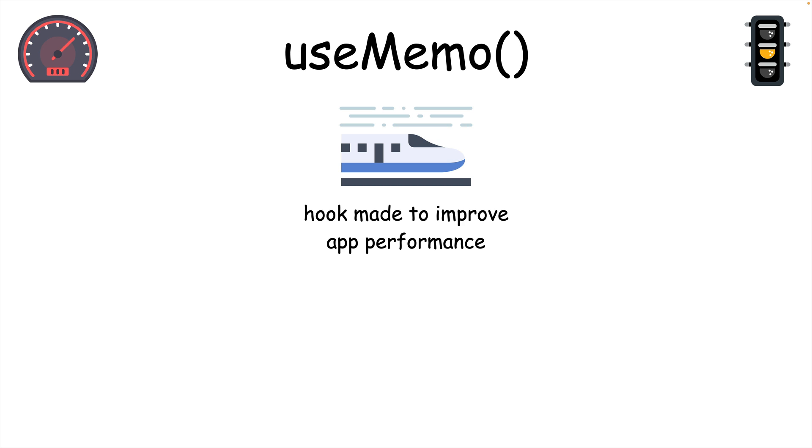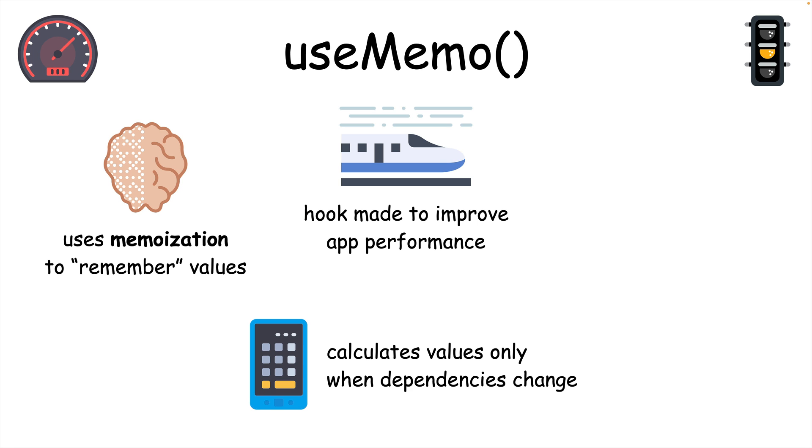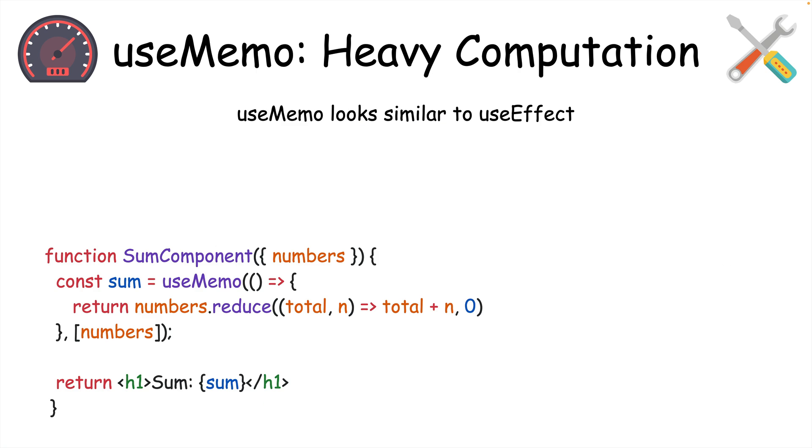useMemo is one of two hooks made to improve your app's performance. It uses something called memoization to improve performance by caching previous results. useMemo will recompute the cached value only when one of its dependencies has changed, and this makes it good for performing expensive computations. useMemo looks similar to useEffect, but it's not for side effects, and it must return a value.